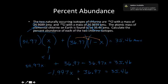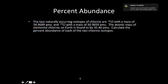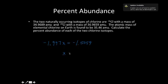The next step is to subtract 36.97 from both sides, giving negative 1.997X equals negative 1.5059. Divide both sides and we find that X equals 0.75. Multiply by 100, and that is 75%.